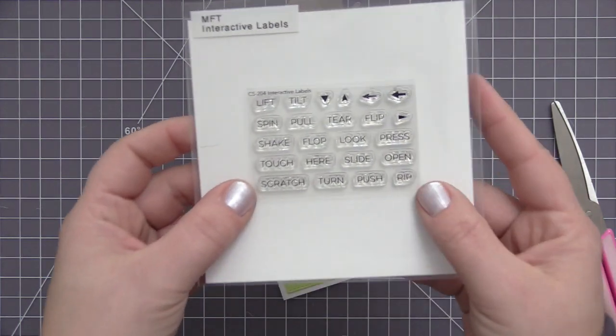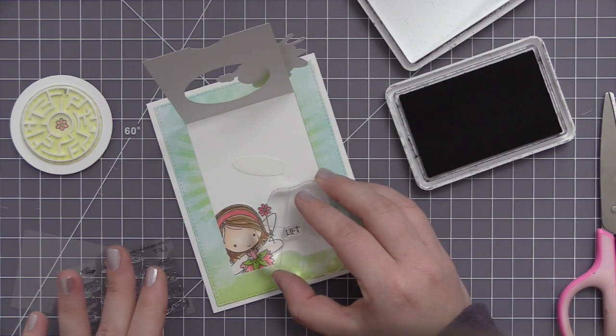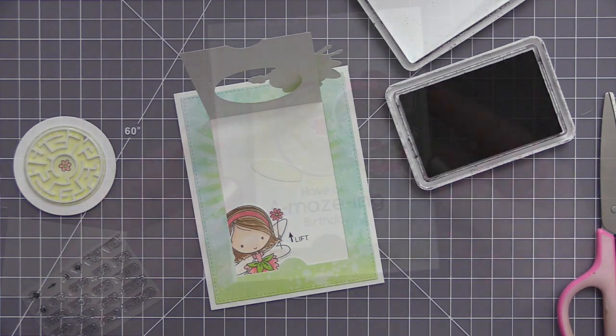To make sure that she sits properly on the card front, because that maze game is a little bit dimensional, I used two layers of double-sided foam tape underneath that fairy to add her on there.